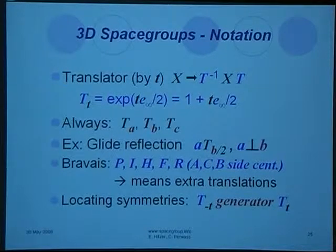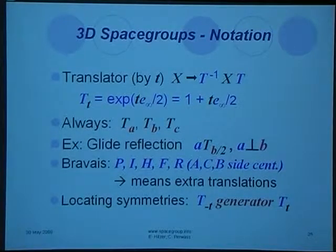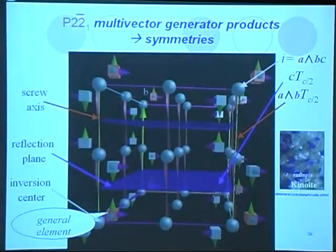That always means extra translations. This is a basic way you relocate symmetry from the origin to the position T using the translators on both sides.